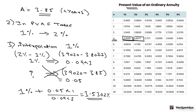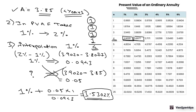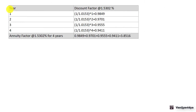Now let us cross-check this. The discount rate is 1.5302%. If the annuity factor is 3.85 for four years, that means at the end of every year we are receiving rupee 1 as a cash inflow — so 4 payments total — and the present value of all these cash inflows should be 3.85. Let us verify this by calculating the discount factor for each year: years 1, 2, 3, and 4.